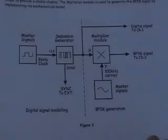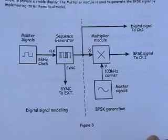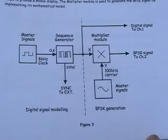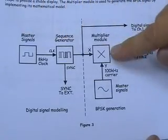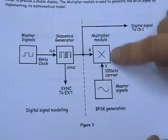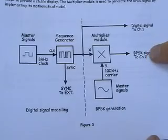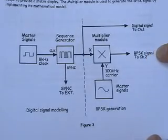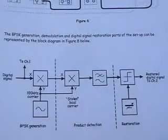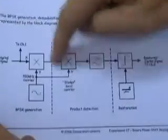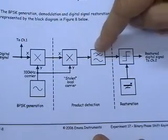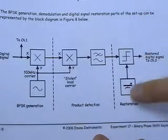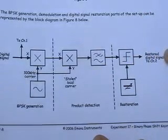Let us now take a look at a BPSK experiment in the manual. Start with a sequence generator. Clock from the master signals multiplied by carrier signals gives us a BPSK — this is a typical block diagram. On the following page we have the BPSK generation, demodulation, filtering, then level translation of the recovered signal, which gives us the restored digital signal for demodulation.